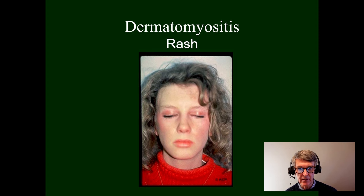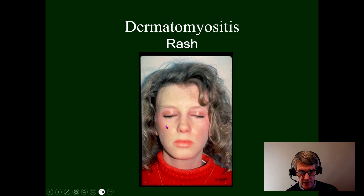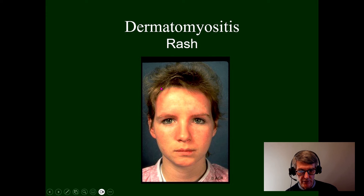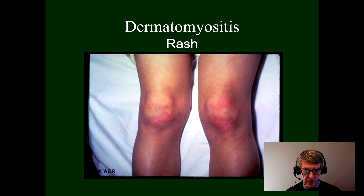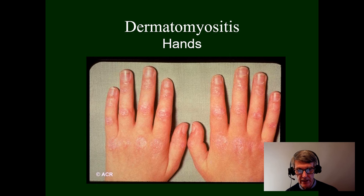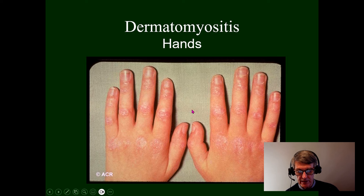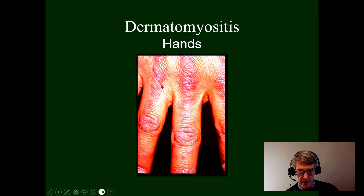The rash characteristically affects the eyelids, cheeks, and bridge of the nose. It can affect the forehead, the front and back of the chest. There is involvement of the knees with reddish, plaque-like skin. When it involves the dorsum of the finger joints — the knuckles — we get pink plaque-like lesions over the DIPs, PIPs, and MCPs. These are known as Gottron's papules.